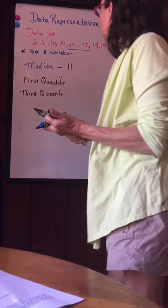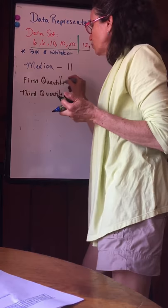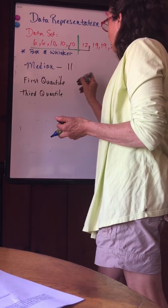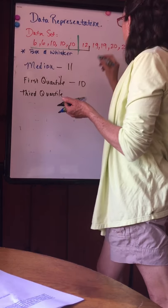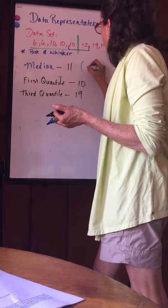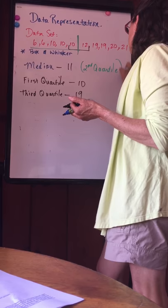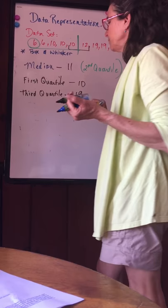For a box and whisker we also need the first and the third quartile. So for the first quartile, all I do is take the first half of the data set and I find its median. So the first quartile is really the median of the first half of your data set. First quartile here is going to be 10. Third quartile is going to be the median of the second half of the data set and third quartile here is going to be 19. The median is also known as the second quartile. I also need the minimum value, 6 is the minimum and the maximum 21.